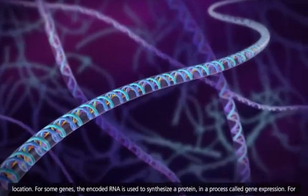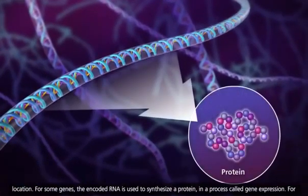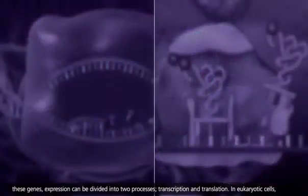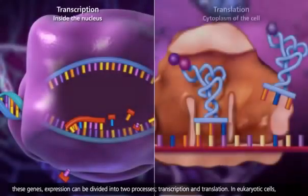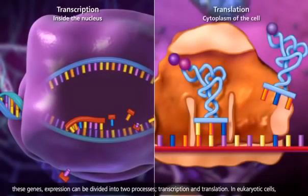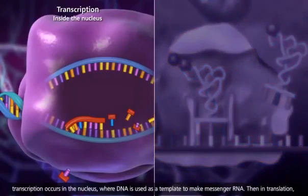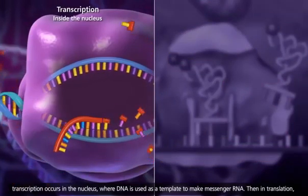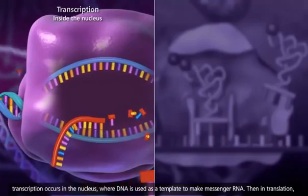For some genes, the encoded RNA is used to synthesize a protein in a process called gene expression. For these genes, expression can be divided into two processes, transcription and translation. In eukaryotic cells, transcription occurs in the nucleus, where DNA is used as a template to make messenger RNA.